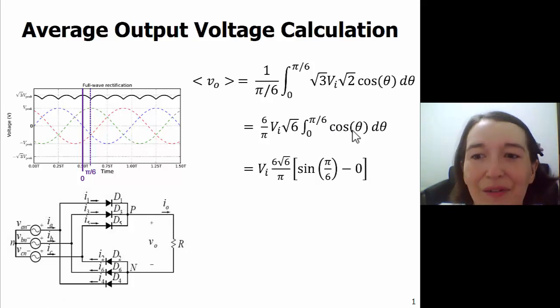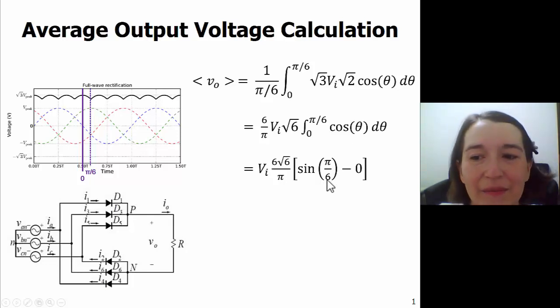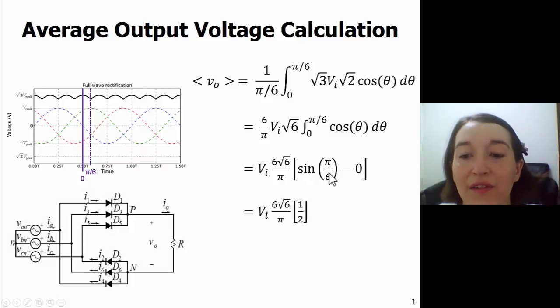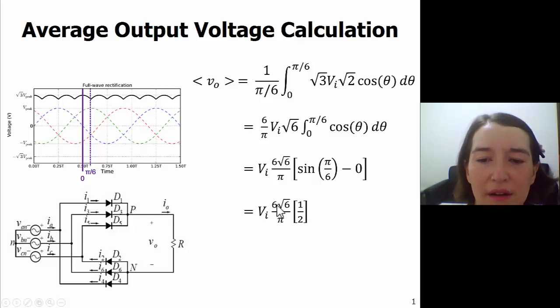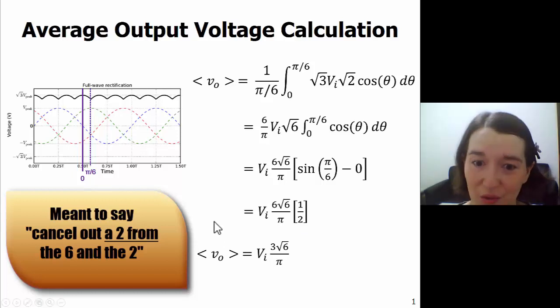The integral of cosine is sine, and we can evaluate it at π over 6 here. The sine of zero will just be zero, so we get that subtraction here, and we can move our terms around here so we have Vi in the front. To evaluate this, we know that sine of π over 6 is just going to be one-half, so we can put that in here. We can cancel out the six and the two, and we'll end up with this equation.